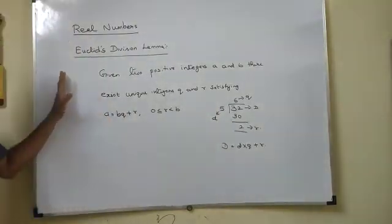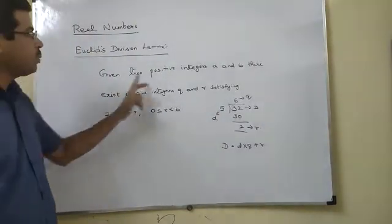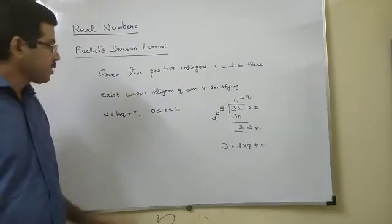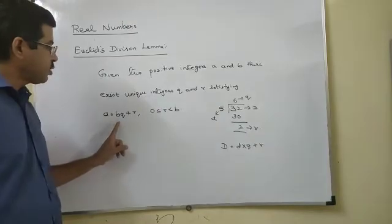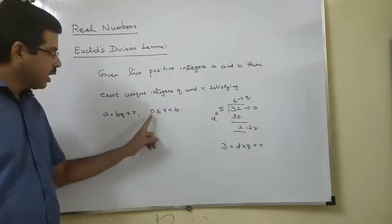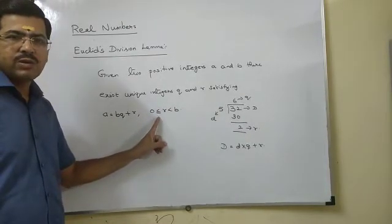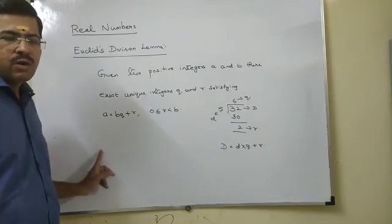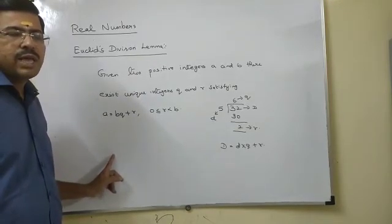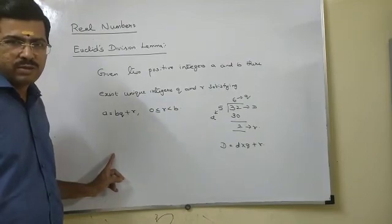Therefore, Euclid's division lemma states that, given two positive integers A and B, there exist unique integers Q and R satisfying A equals BQ plus R and 0 less than or equal to R less than B. Using this, we are going to find out the HCF of two given numbers. So let us move on with exercise 1.1.